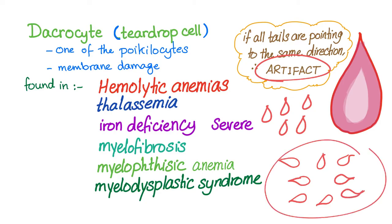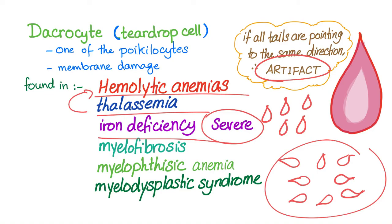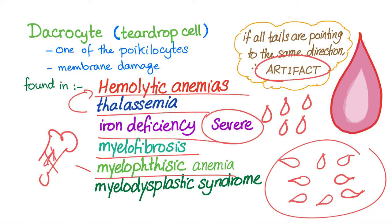Diseases include hemolytic anemias, thalassemia — which is a hemolytic anemia — iron deficiency anemia especially in severe cases, myelofibrosis, myelophthysic anemia. Myelophthysic just means the bone marrow got infiltrated by different tissue. Also myelodysplastic syndrome, or MDS. We'll talk about these conditions later.